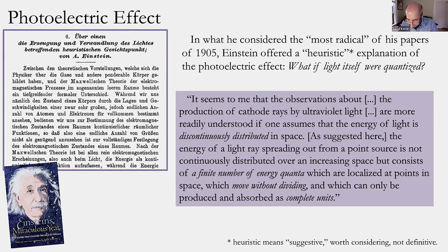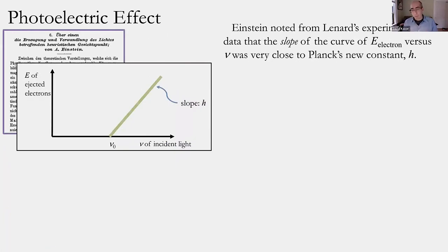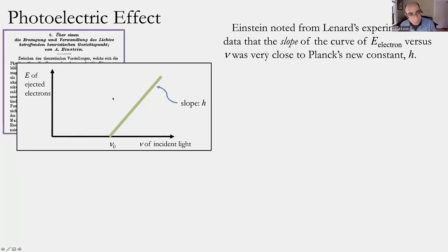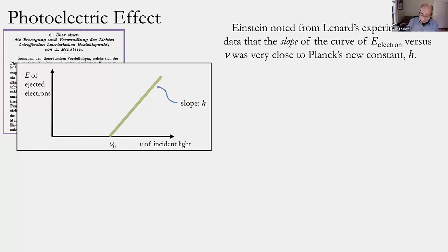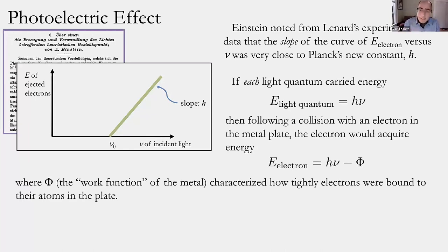In Einstein's 1905 paper, he writes that 'the energy of a light ray spreading out from a point source is not continuously distributed over an increasing space' — like a wave — 'but rather consists of a finite number of energy quanta which are localized at points in space, which move without dividing, and which can only be produced and absorbed as complete units.' These became known as light quanta — little particles or corpuscles of light, rather than the waves that had been taken for granted since Thomas Young's work.